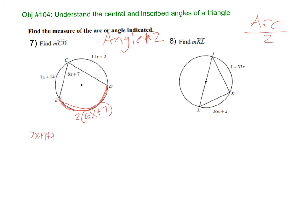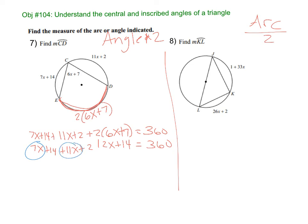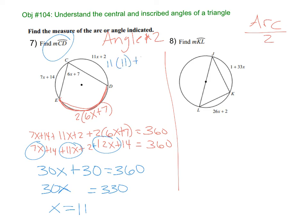So 7x plus 14, 11x plus 2, and 2 times 6x plus 7. And then all of those arcs together have to equal 360, the whole circle. So here I get 12x plus 14. I have to combine like terms. All right, so I have 7x, 11x. That's 18. I lost my plus there. So let's see, 18, that's 30x. Plus, we have 28 and 2 is 30. 30x plus 30 equals 360. So 30x equals 330. Divide, and we get 11. So now the question is asking for CD, right? So then we're going to go 11 times 11 plus 2. 121 plus 2. The answer is 123. Done.